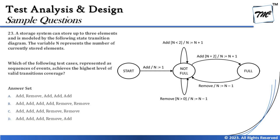We need to understand the diagram — there are some equations written, but it's not complicated. Looking at the diagram, the transition named 'add' has the condition n = 1, and n becomes n + 1. The 'remove' transition has condition n > 0, and n becomes n − 1. To make it simpler, I'm going to label the transitions t1, t2, t3, t4, and t5, so we can compare them more easily.